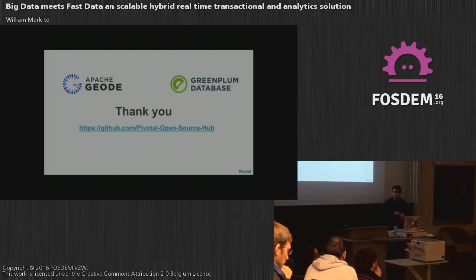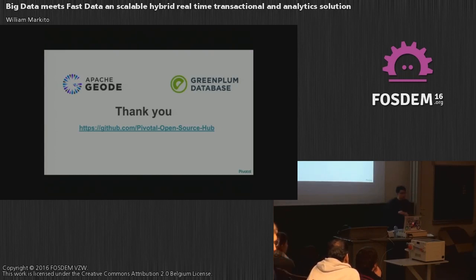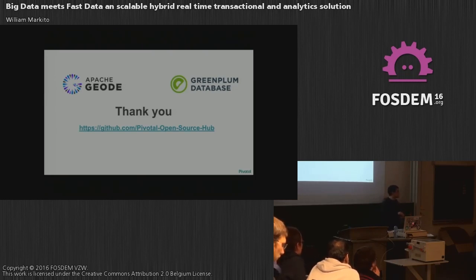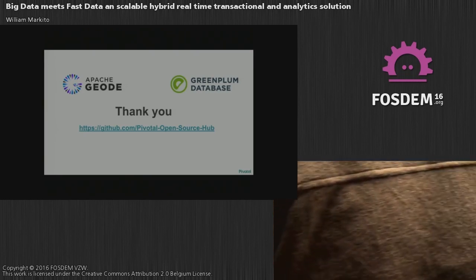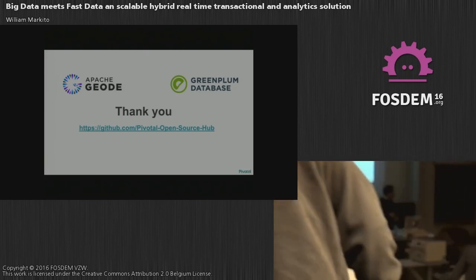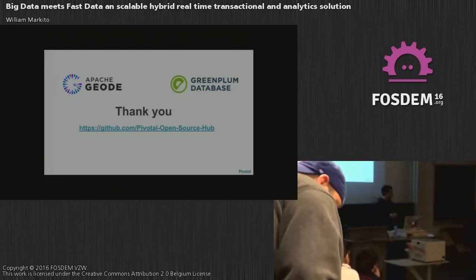Q&A: The major problem we are having right now is with hashing. We are trying to understand how to keep it consistent, given the way Geode serializes data versus how Greenplum serializes data. There is also a challenge because Geode is Java and Greenplum is C++, so there's some data translation work. But we are pretty sure it's doable with time, and we keep working on it.